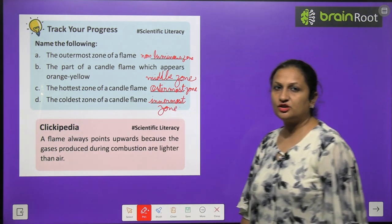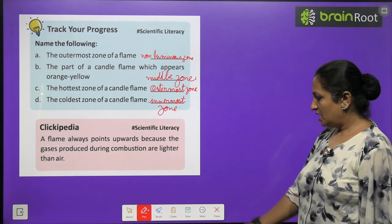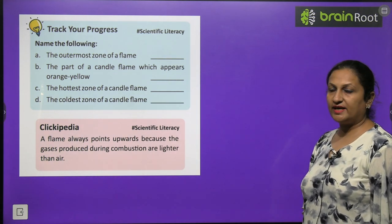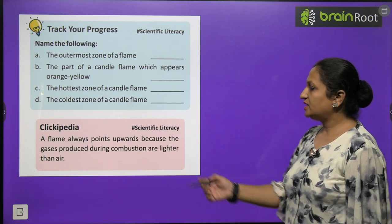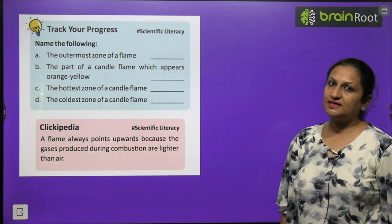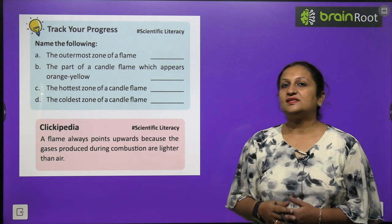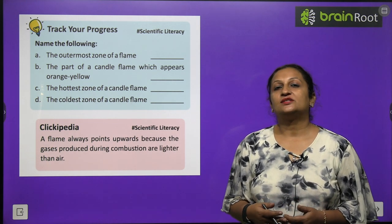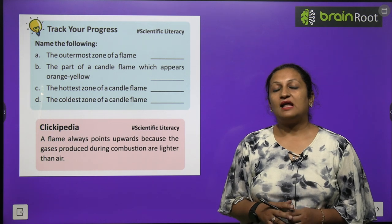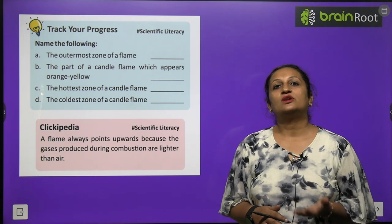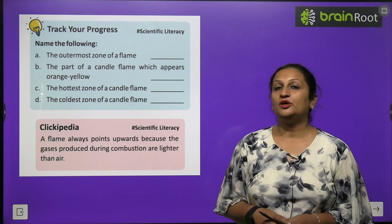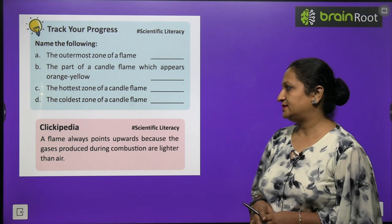A flame always points upward because the gases produced during combustion are lighter than air and rise up — that is why the flame is always seen moving upward.